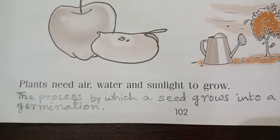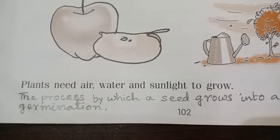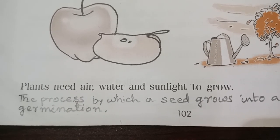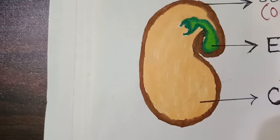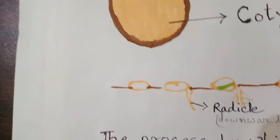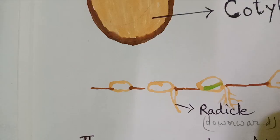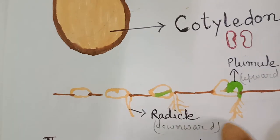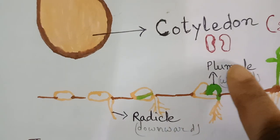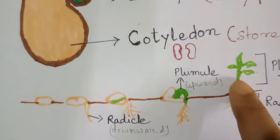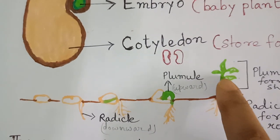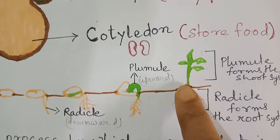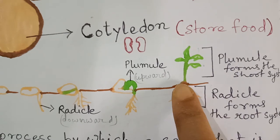When you put the seed in the soil, they start growing when they get air, water and sunlight. So this is a seed — when it is put inside the soil, it starts coming down. The root portion goes down. Then one portion goes up — this is the shoot portion that goes above the soil. The portion which comes down is the root system.